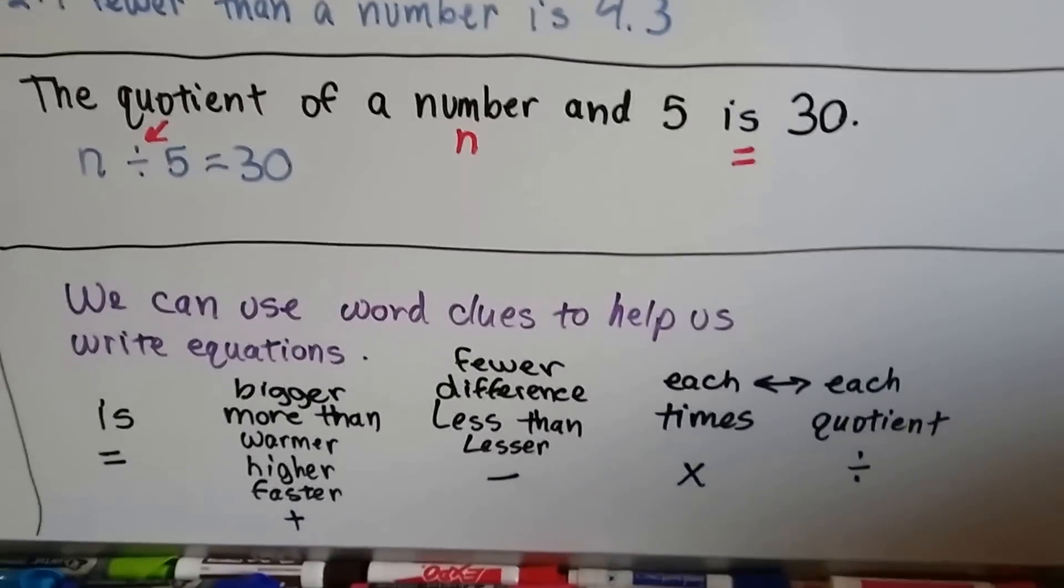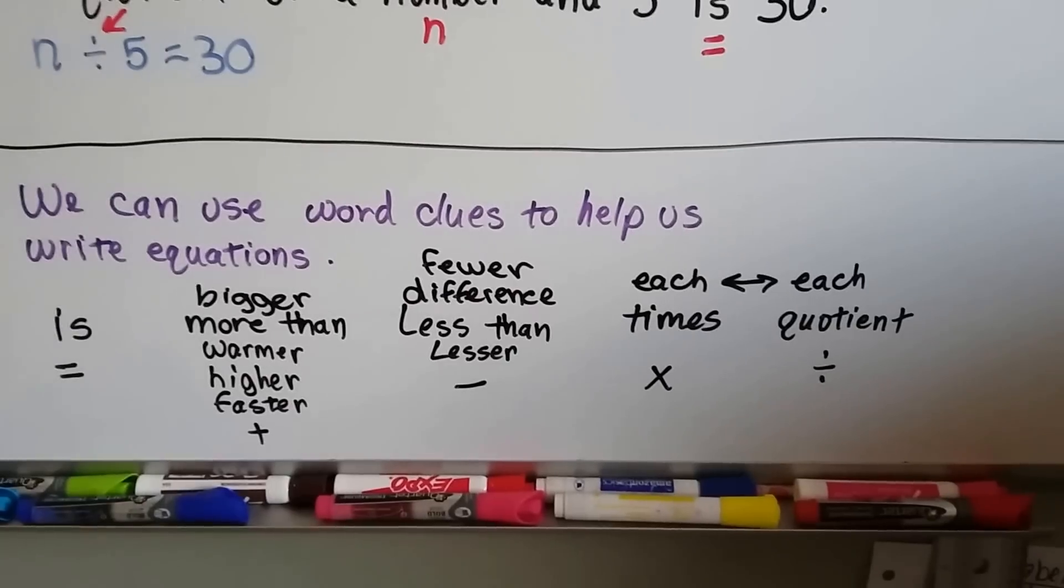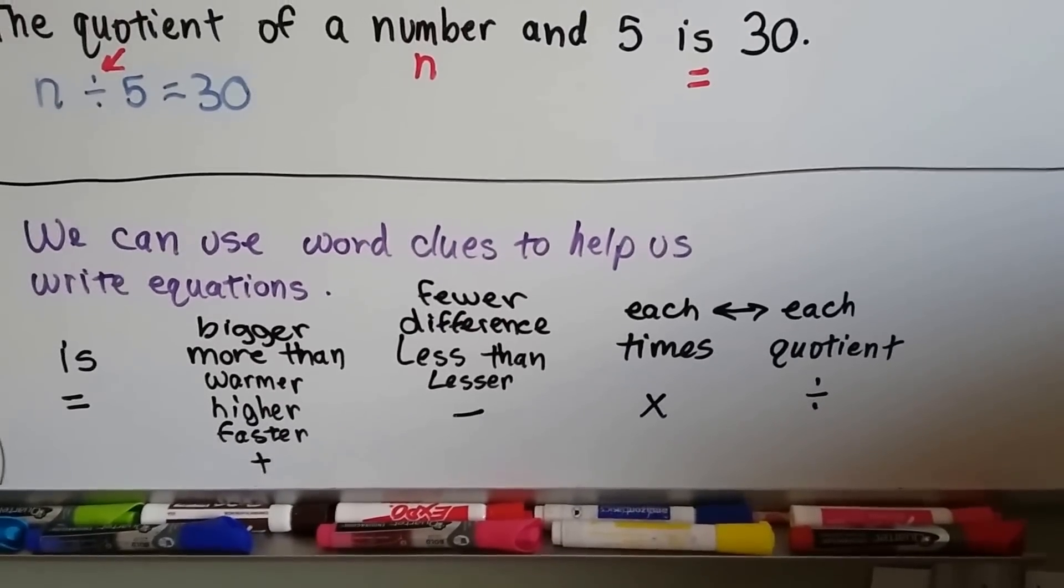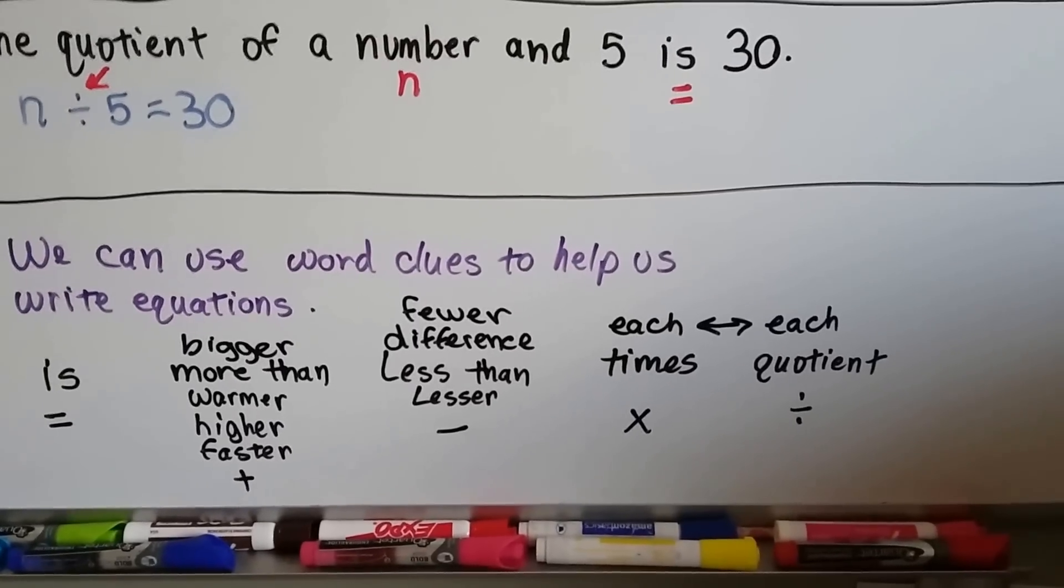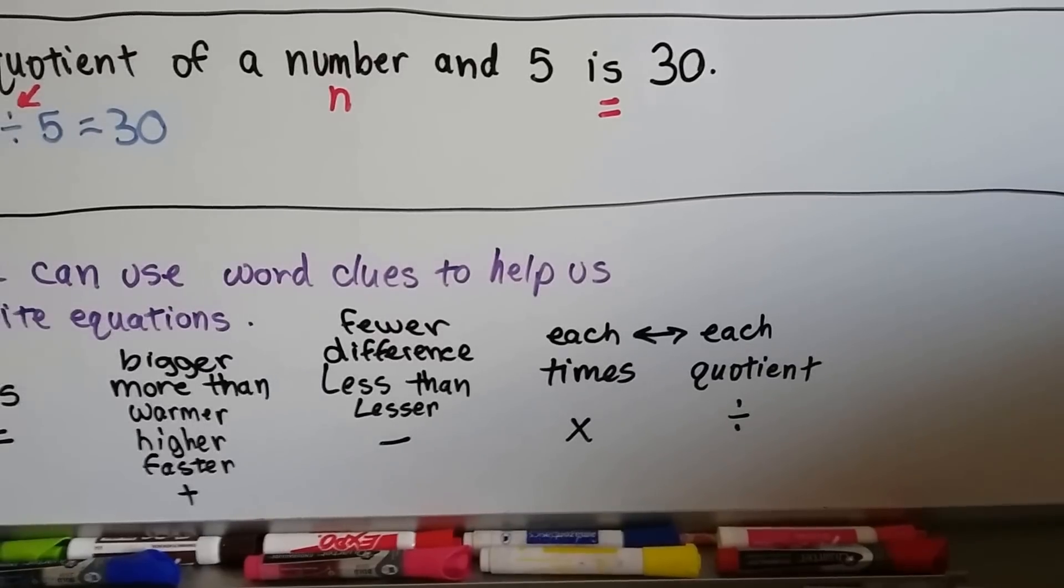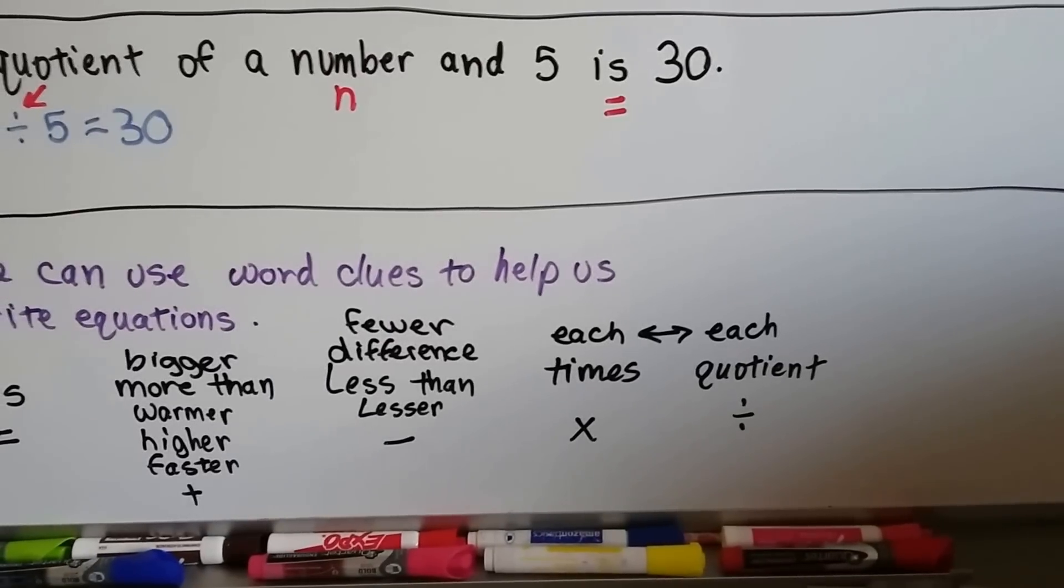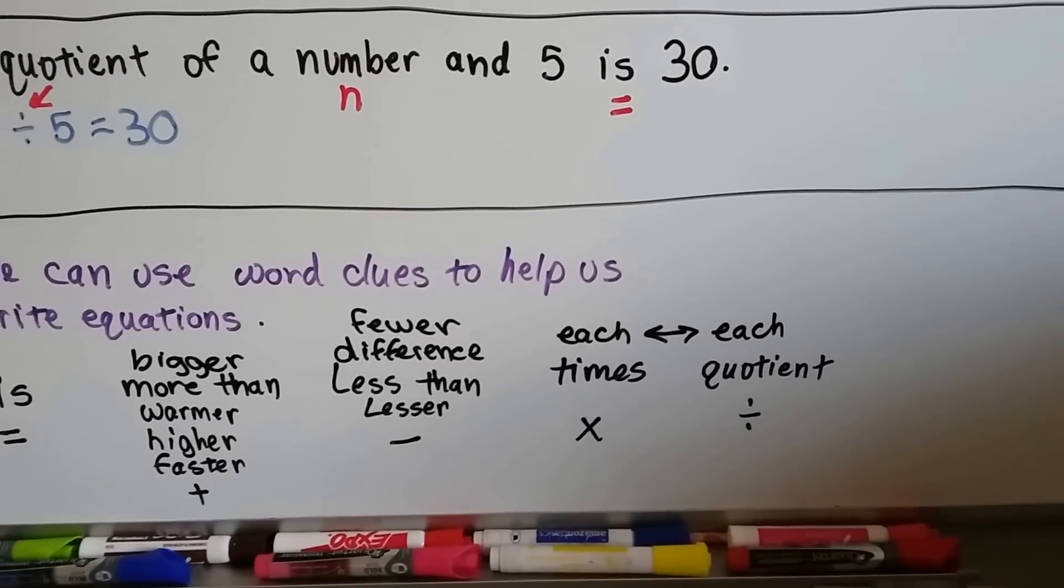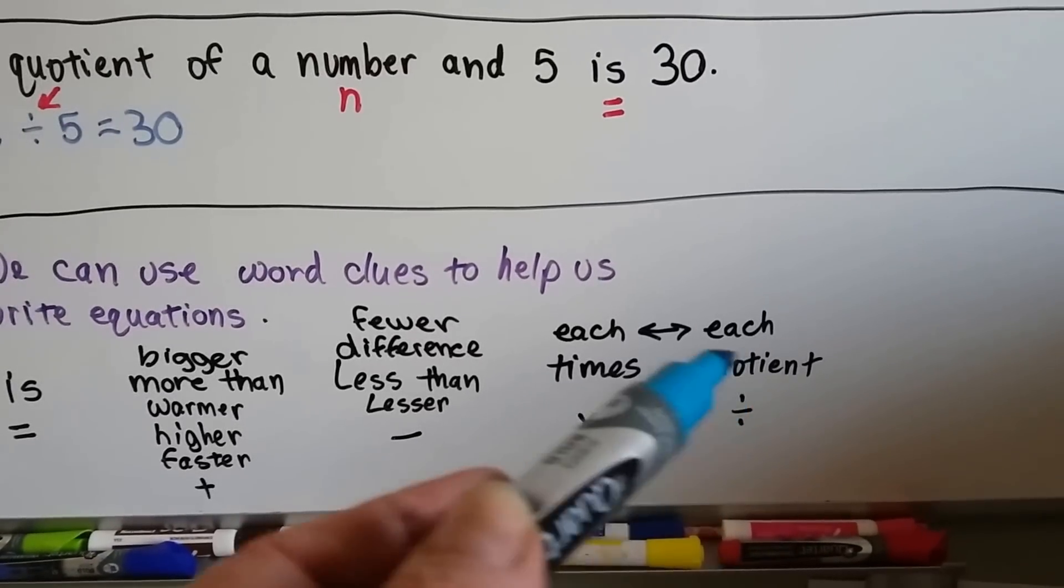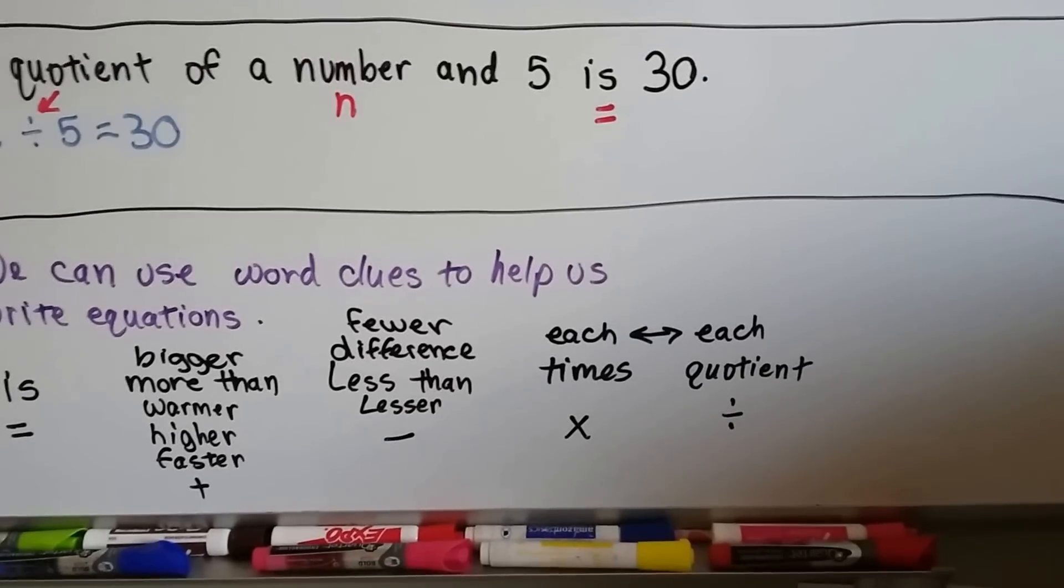So, we can use word clues to help us write equations. Is would be equals. Bigger, more than, warmer, higher, faster - that would be addition. Fewer, difference, less than, lesser - that would be subtraction. If it says each times or so many times, then we know it's multiplication. If it says how many each or quotient, we know it's division.